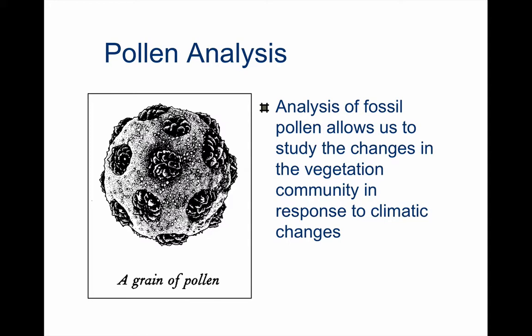One of the most important of these is fossil pollen. Pollen produced by plants as part of their reproductive cycle does give us an indication of the vegetation community that existed in the past. Pollen grains are tiny and produced in vast numbers by plants. Really importantly, they're extremely robust. Chemically they're very stable, and physically they're quite tough. The only thing that they don't cope well with is prolonged exposure to oxygen.